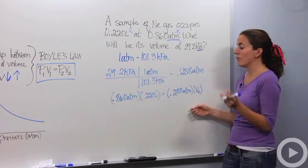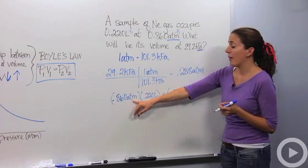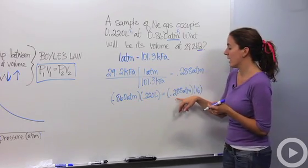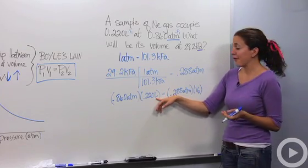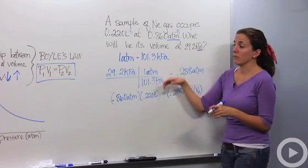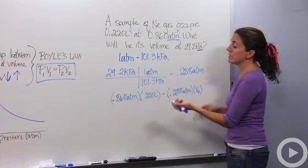Before we even solve this, let's predict what our volume should be. Our atmosphere goes from 0.8 down to 0.3, so it drops. What's going to happen to our volume? Our volume should increase according to our relationship that we discovered earlier.